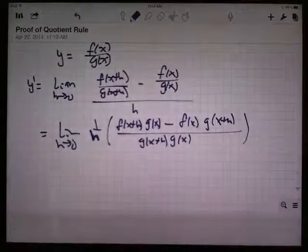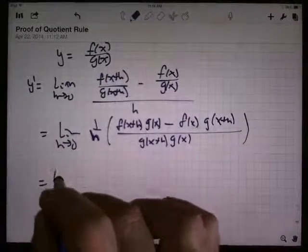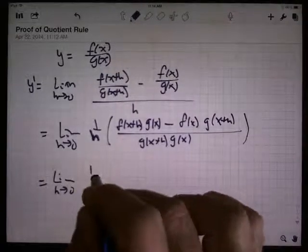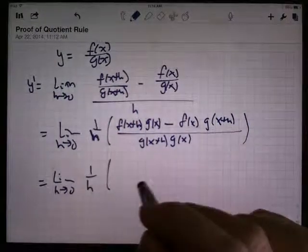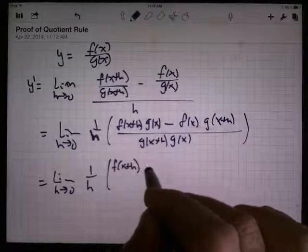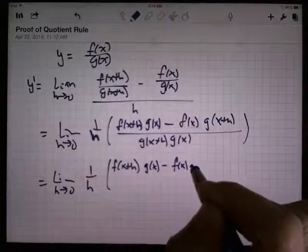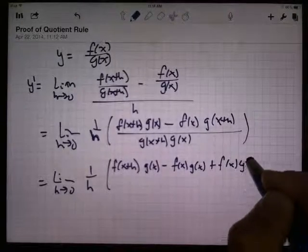Like with the product rule, I'm going to do a little magic here and add 0. So this is the limit as h goes to 0 of 1 over h times f of x plus h times g of x, and I'm going to subtract f of x times g of x, then add f of x times g of x.